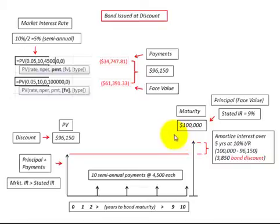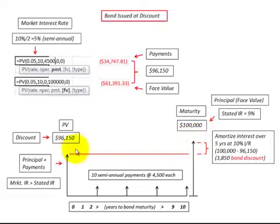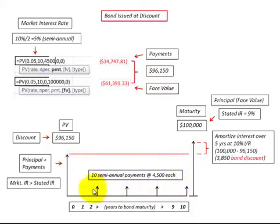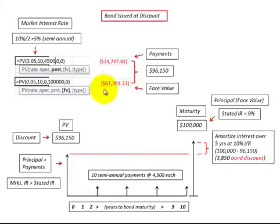That's a summary on bonds issued at a discount and how you calculate their present value. Remember, you have a maturity or face value amount that has to be discounted back to present value, along with this series of bond interest payments. There are two components: the face value or principal discounted back, plus the interest payments discounted back. You can use financial discount tables or a financial calculator — in this case I demonstrated it with an Excel function.